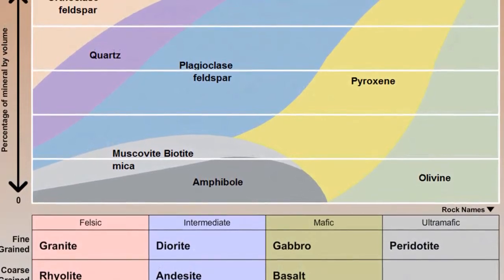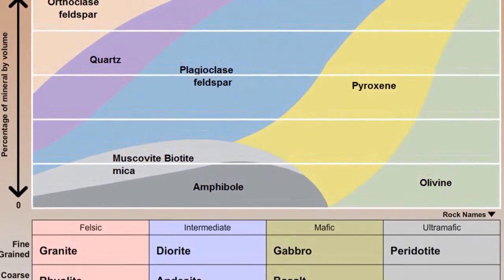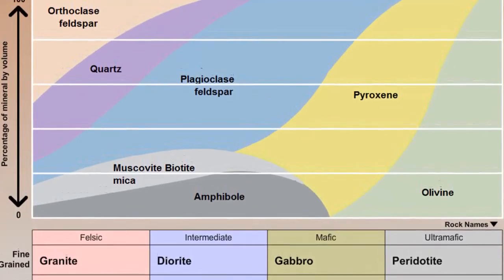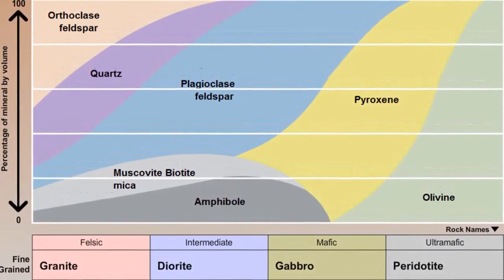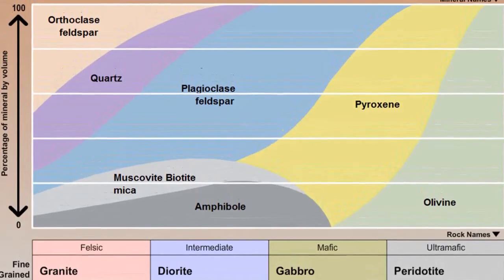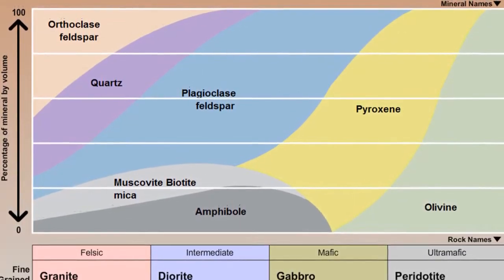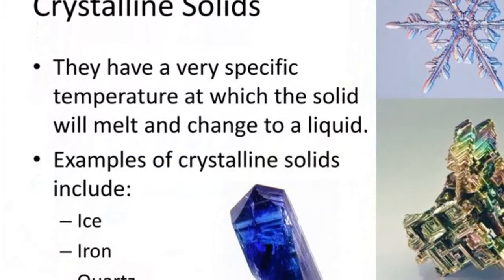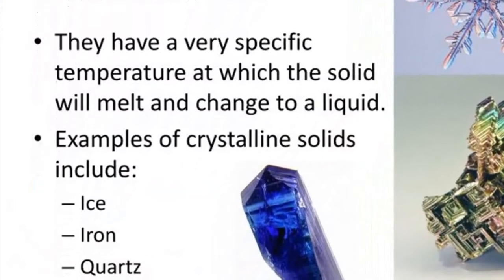Igneous rocks solidify from liquid magma to form crystalline rock. When magma is at its hottest, ions and groups of ions join together and break apart constantly.